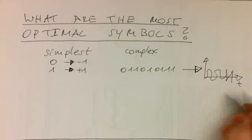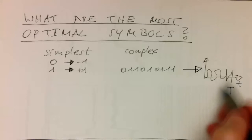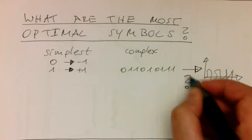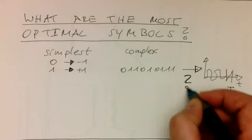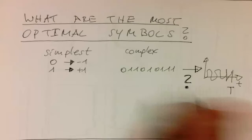And for every of these permutations here, obviously we need to have a different time domain symbol. We are able to transmit, and the question is obviously how to do that in a systematic way.